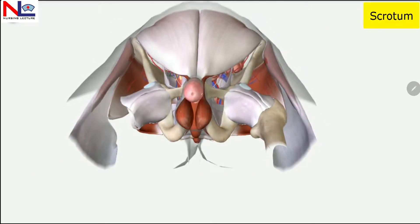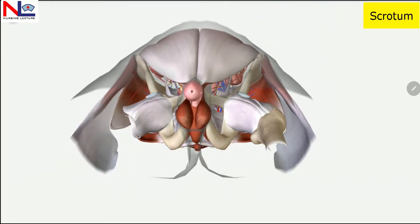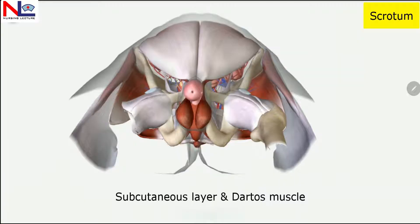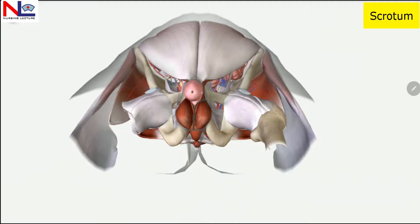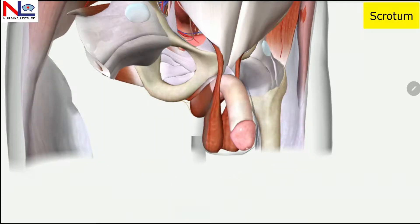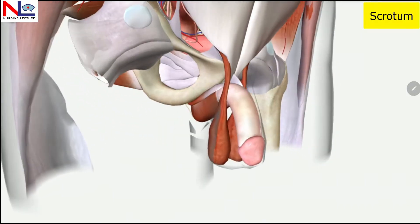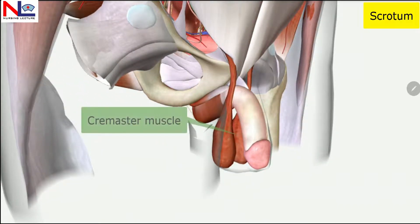Internally, this sac-like structure is divided into two parts by a scrotal septum, and this septum is formed by the subcutaneous layer as well as the dartos muscle. This forms two parts internally, and each part consists of a testis, which is the male gonad. Within these compartments, the testes are covered by a muscle, visible bilaterally, termed the cremaster muscles.